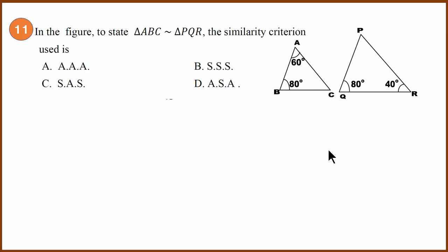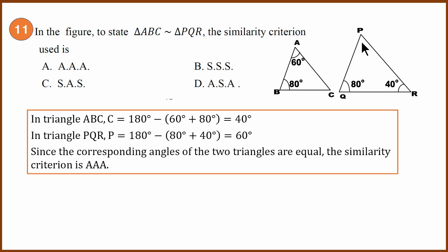Eleventh question is an interesting question. You have been given two triangles and are asked on what basis they are similar. Two angles are given so you can find the third angle. When you find the third angle, you see that one is 40 degrees and the other is 60 degrees. Since all corresponding angles of the two triangles are equal, they are similar and the similarity criterion is angle-angle-angle, which is A.